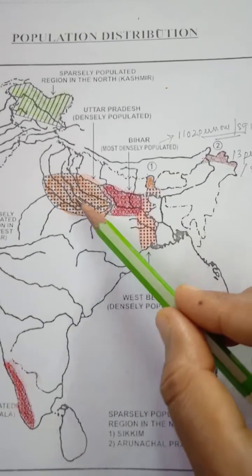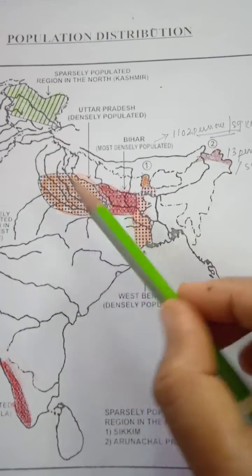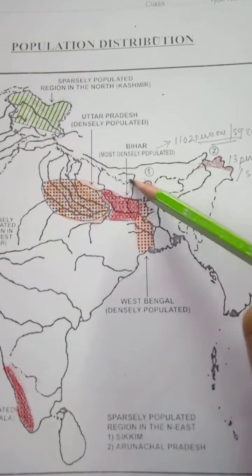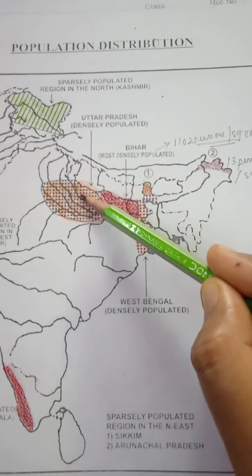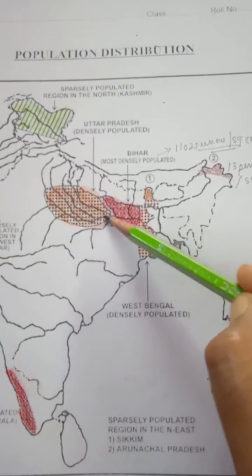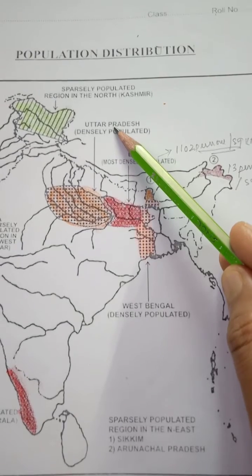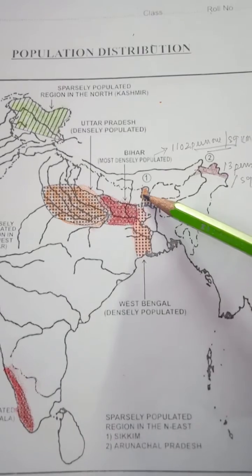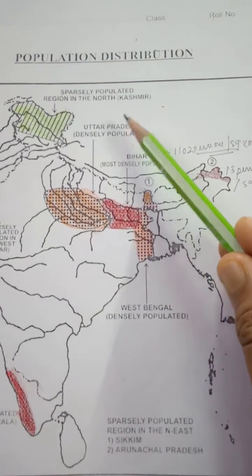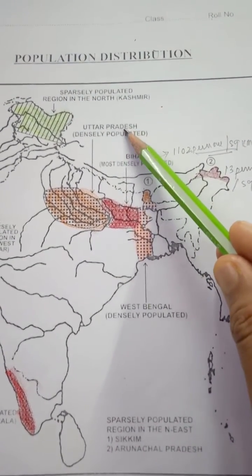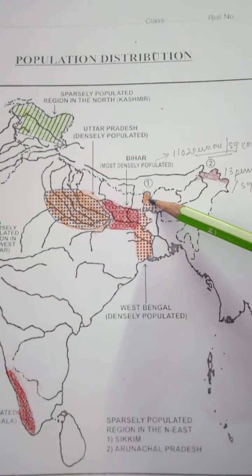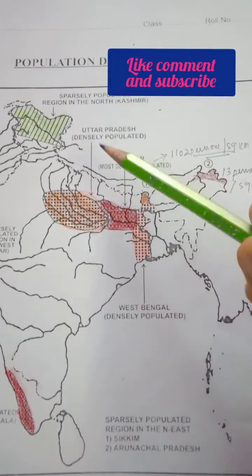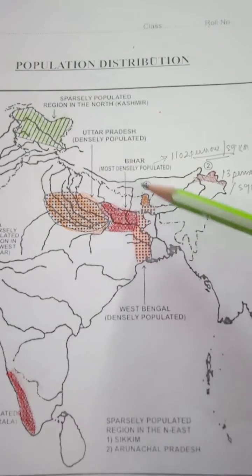Next, according to the total number of population, Uttar Pradesh is having the highest total population. Though Bihar is most dense, according to total numbers Uttar Pradesh is highest and Sikkim is lowest. Uttar Pradesh has near about 25 crore population, while Sikkim has only 5 lakh.